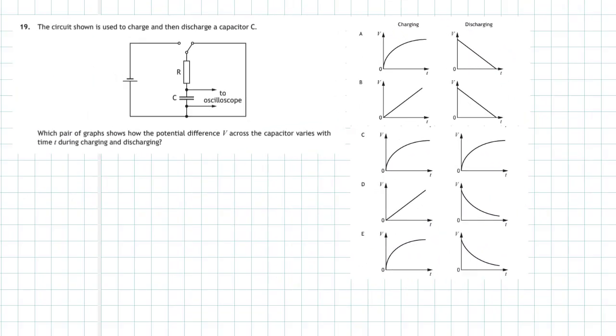Question 19 from section 1 of the 2018 Higher Physics examination. We have a circuit which is used to charge and then discharge a capacitor C, and information is fed into an oscilloscope or laptop where you can see the graphs. You're given a choice of graphs and asked to find which pair shows how the potential difference across the capacitor varies with time during charging and discharging.